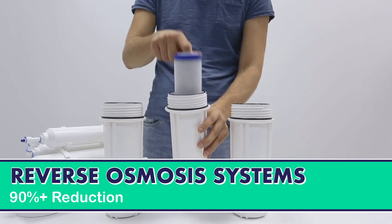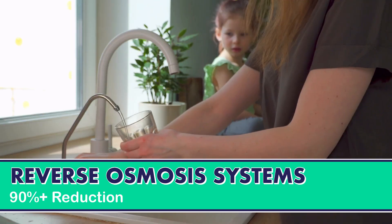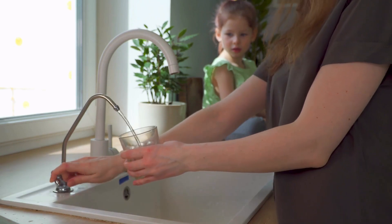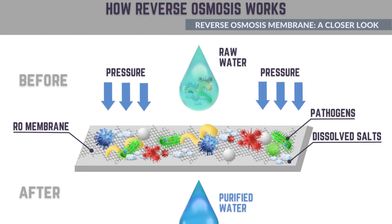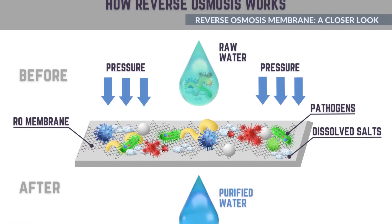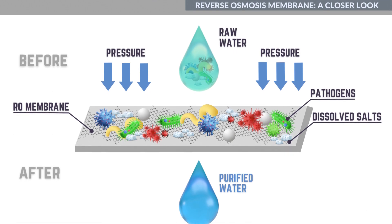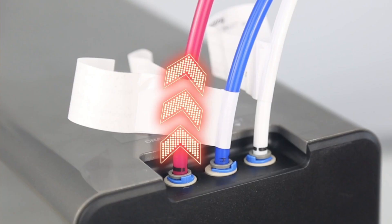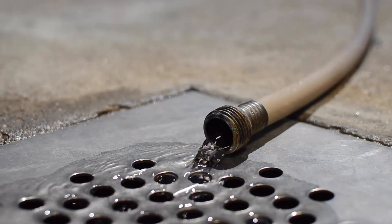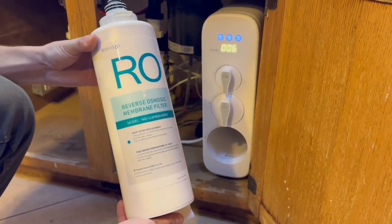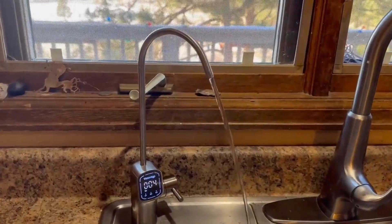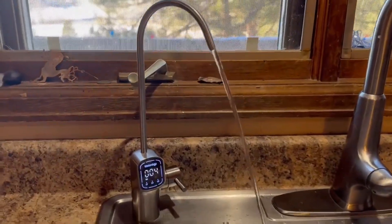The third option are reverse osmosis systems, well known for their thorough filtration. High pressure forces water through a semi-permeable membrane, blocking contaminants from passing through the small pores. The flushed wastewater then carries the contaminants away down the drain. Some systems are more efficient than others, but all RO units will waste water as part of the purification process.